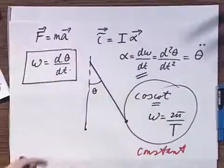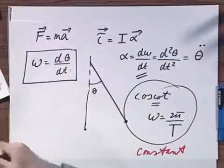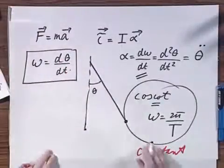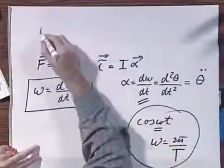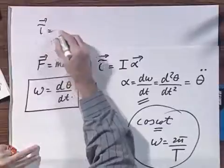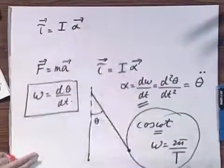So alpha is this d theta dt squared. All right, let's write down once more tau equals I times alpha.